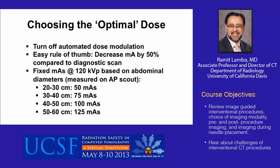Here are strategies for choosing the optimal dose for the localizing scan. Most importantly, I recommend turning automated dose modulation off. Since the diagnostic CT almost always precedes the interventional scan, an estimate of the dose can be obtained from it. An easy rule of thumb is to decrease the mAs by 50% compared to the diagnostic scan; the dose can be decreased by up to 70% depending on the situation. For CT-guided interventional procedures, mAs parameters are based on the abdominal diameter measured on the AP scout. Even for larger patients with an abdominal diameter exceeding 50 cm, I recommend not using an mAs greater than 125.